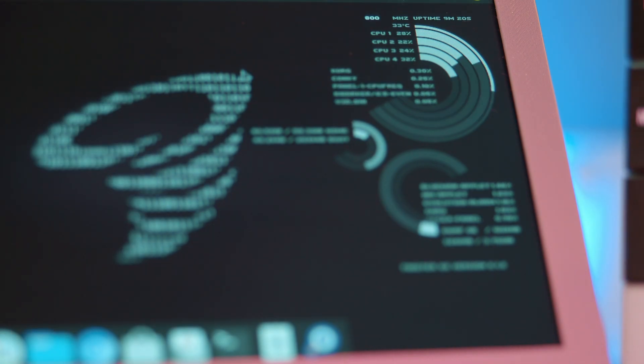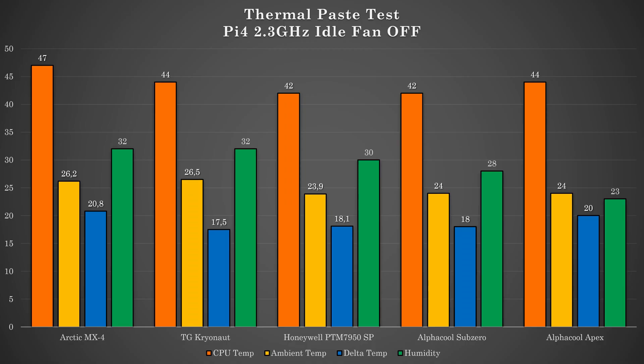And now let's get to the results. Looking at the idle and fan off we can see that all of them are mostly the same. Thermal Grizzly was the best one in this test. Also don't forget you can pause the video and take a closer look at the charts.